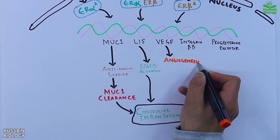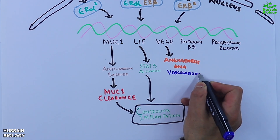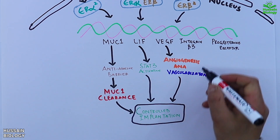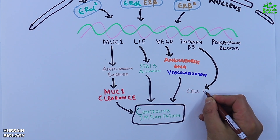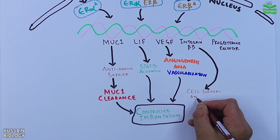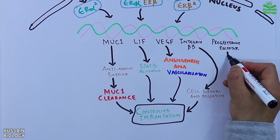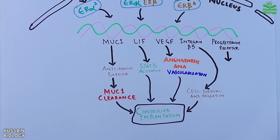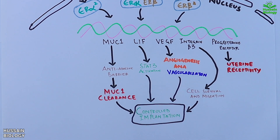Third is VEGF, which facilitates angiogenesis and vascularization. Fourth is integrin beta 3, which mediates cell survival and migration. Fifth is the progesterone receptor, which is key for maintaining pregnancy via uterine receptivity.